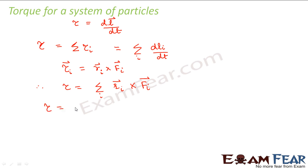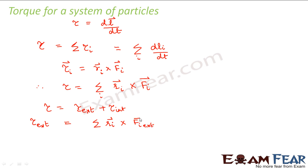Now whenever I talk about torque, I am talking about both external torque as well as internal torque. Just as with force — when I talk about force, I talk about both internal force and external force. But since the internal forces all cancel out in pairs with each other, the net internal force becomes zero. Similarly, in the case of torque, we can define torque external as summation of Ri cross Fi external, and torque internal as summation of Ri cross Fi internal. We know that the internal forces inside the system cancel out in pairs as per Newton's third law, so torque internal is equal to zero.